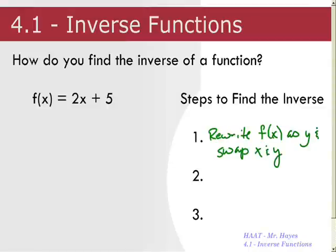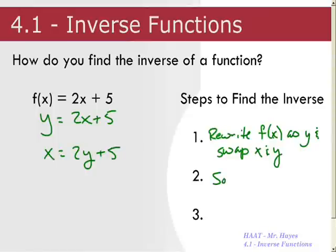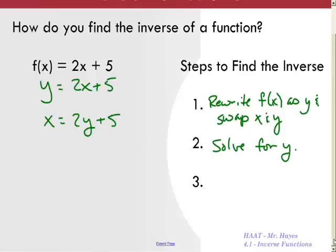You're going to rewrite the function notation as y, and then swap x and y. So in this case, I'm going to write this as y equals 2x plus five, and then I'm going to swap those two. So I'm going to write x equals 2y plus five. And you're going to solve for y. So in this case, to solve for y, you get x minus five is equal to 2y. So then y is going to equal x minus five all over two.